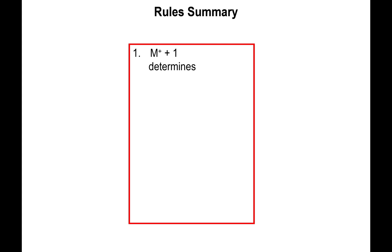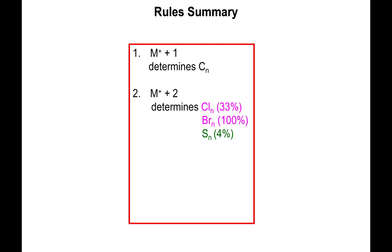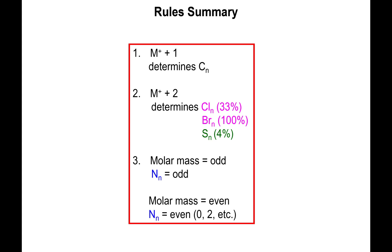To summarize: the M+1 peak determines how many carbons — divide the percentage by 1.1. The M+2 peak determines chlorine in multiples of 33%, bromine in multiples of 100%, and sulfur in multiples of 4%. For nitrogen: if M+ is odd, there are an odd number of nitrogens; if M+ is even, there are an even number of nitrogens, with zero counting as even.